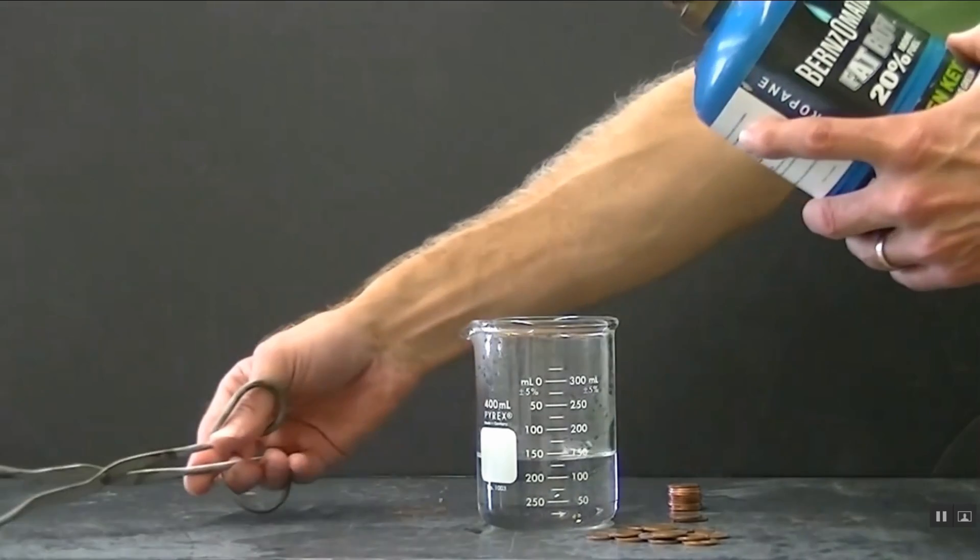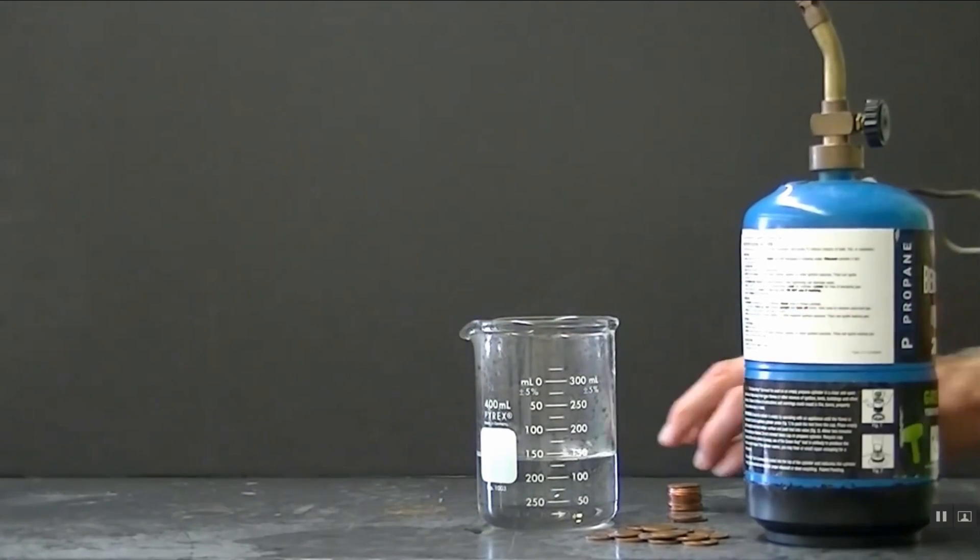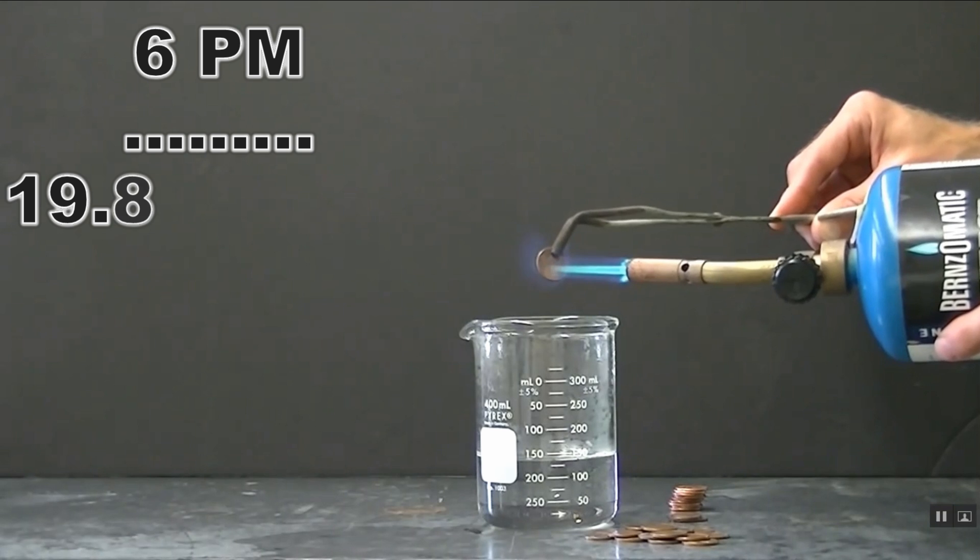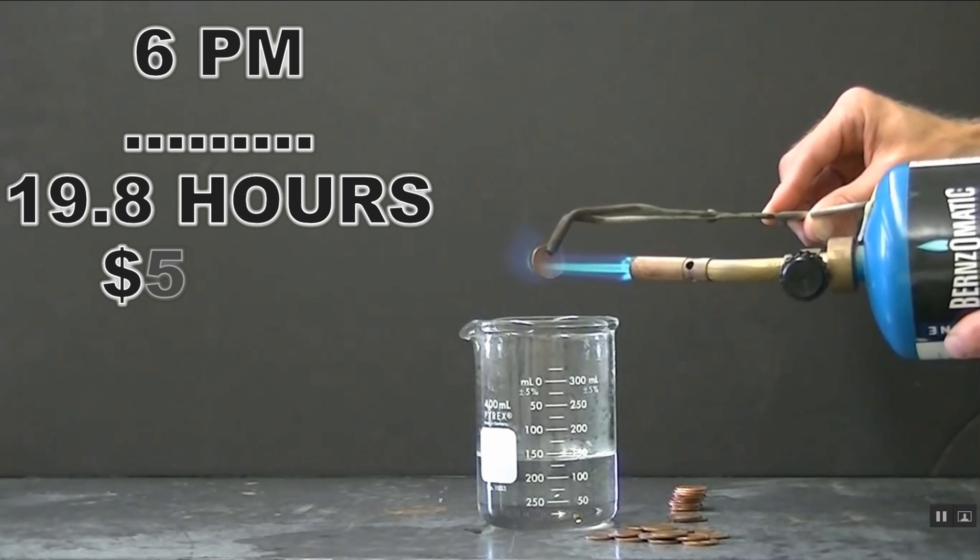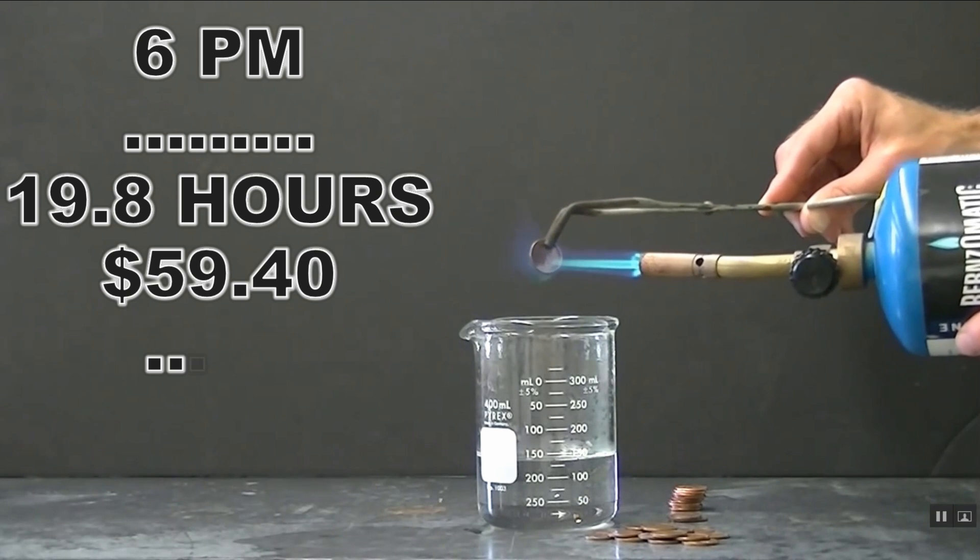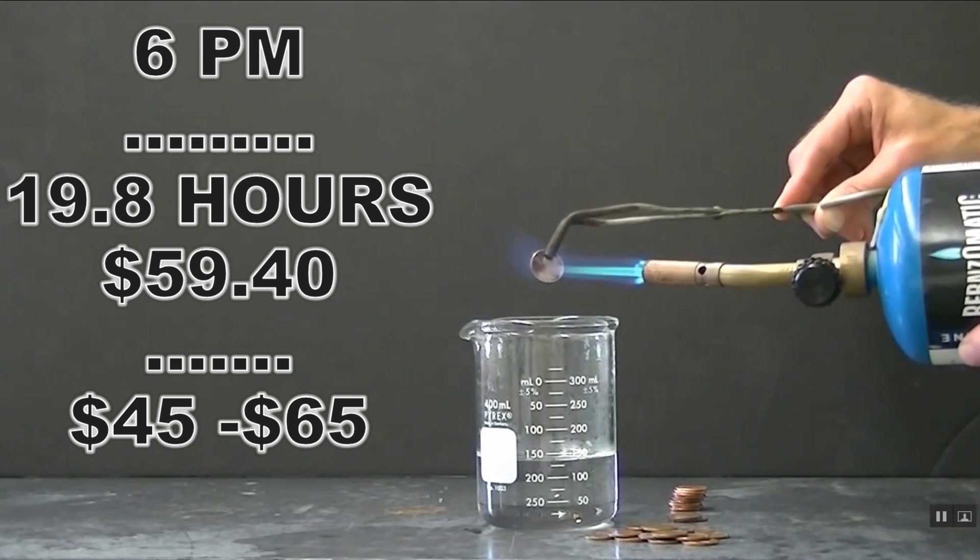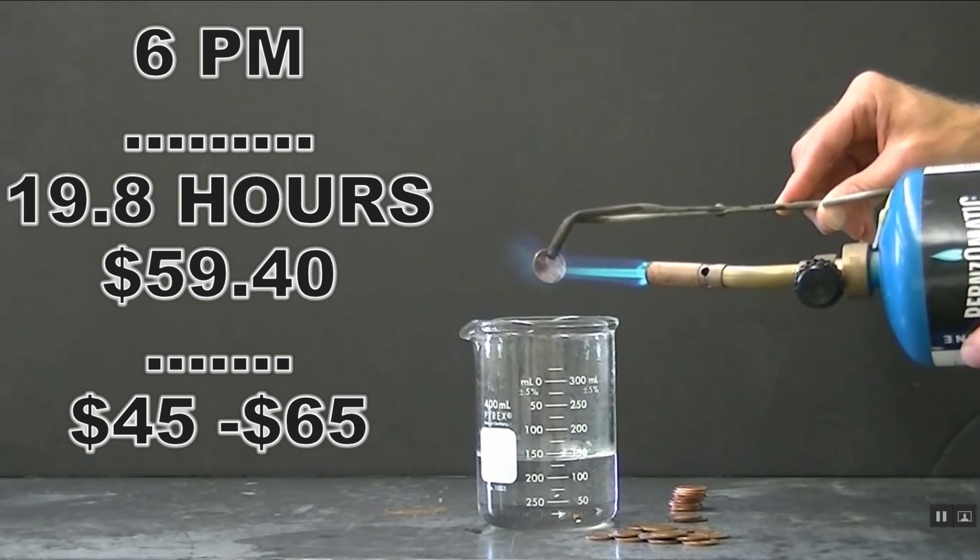Okay so let's say best case scenario. I can do six pennies every minute. That means to get one pound of copper it would take basically almost 20 hours and 59 dollars and 40 cents to get one pound of copper and about 30 pounds of zinc.